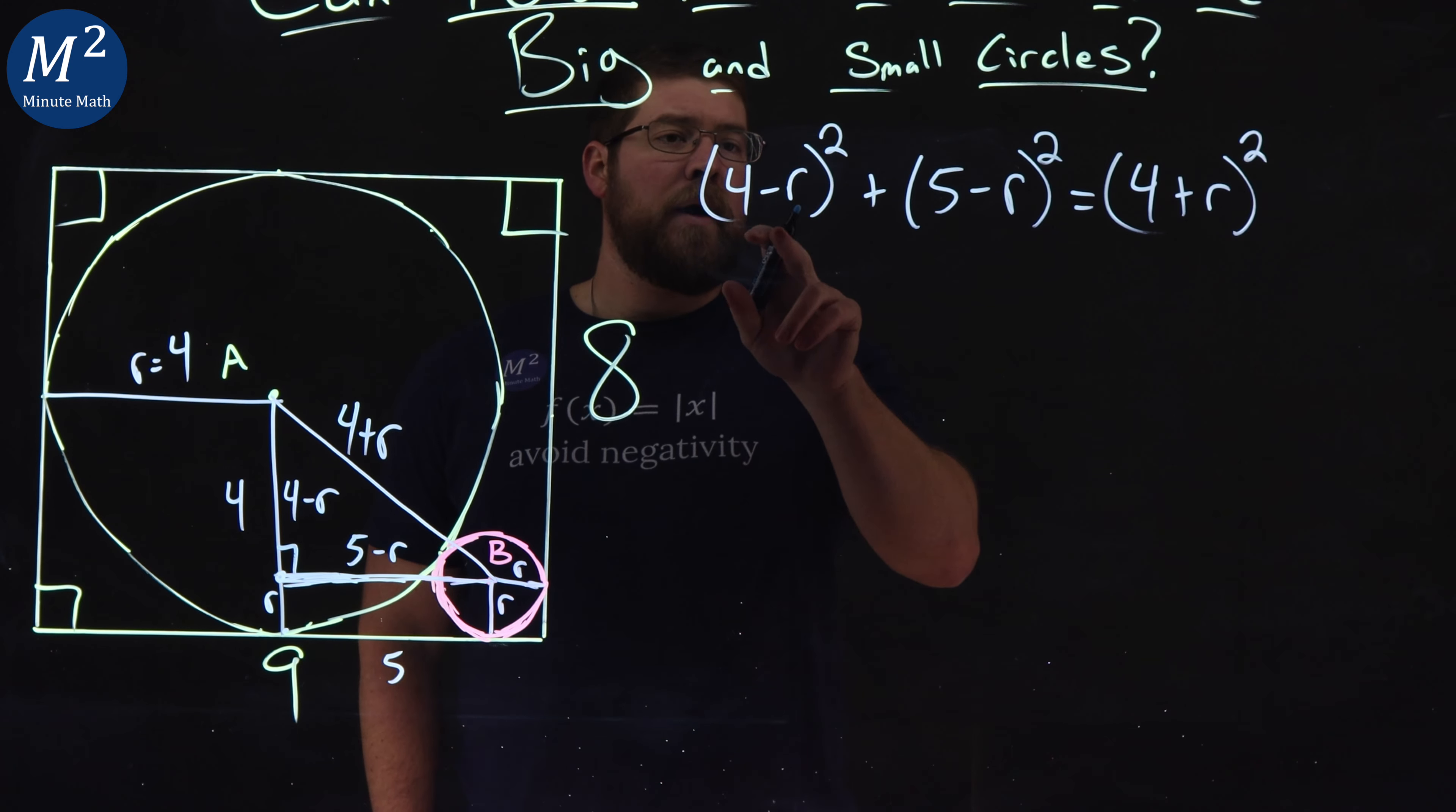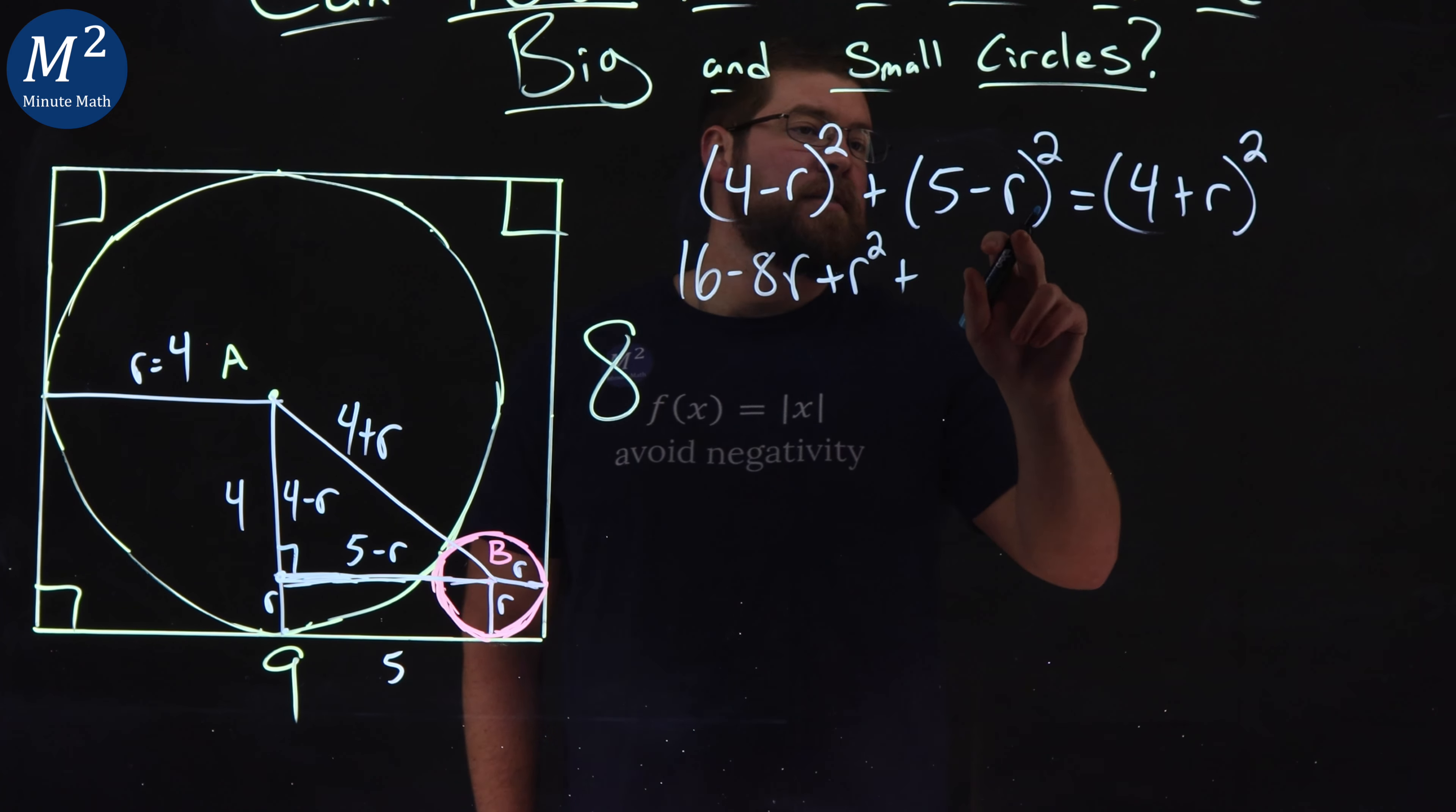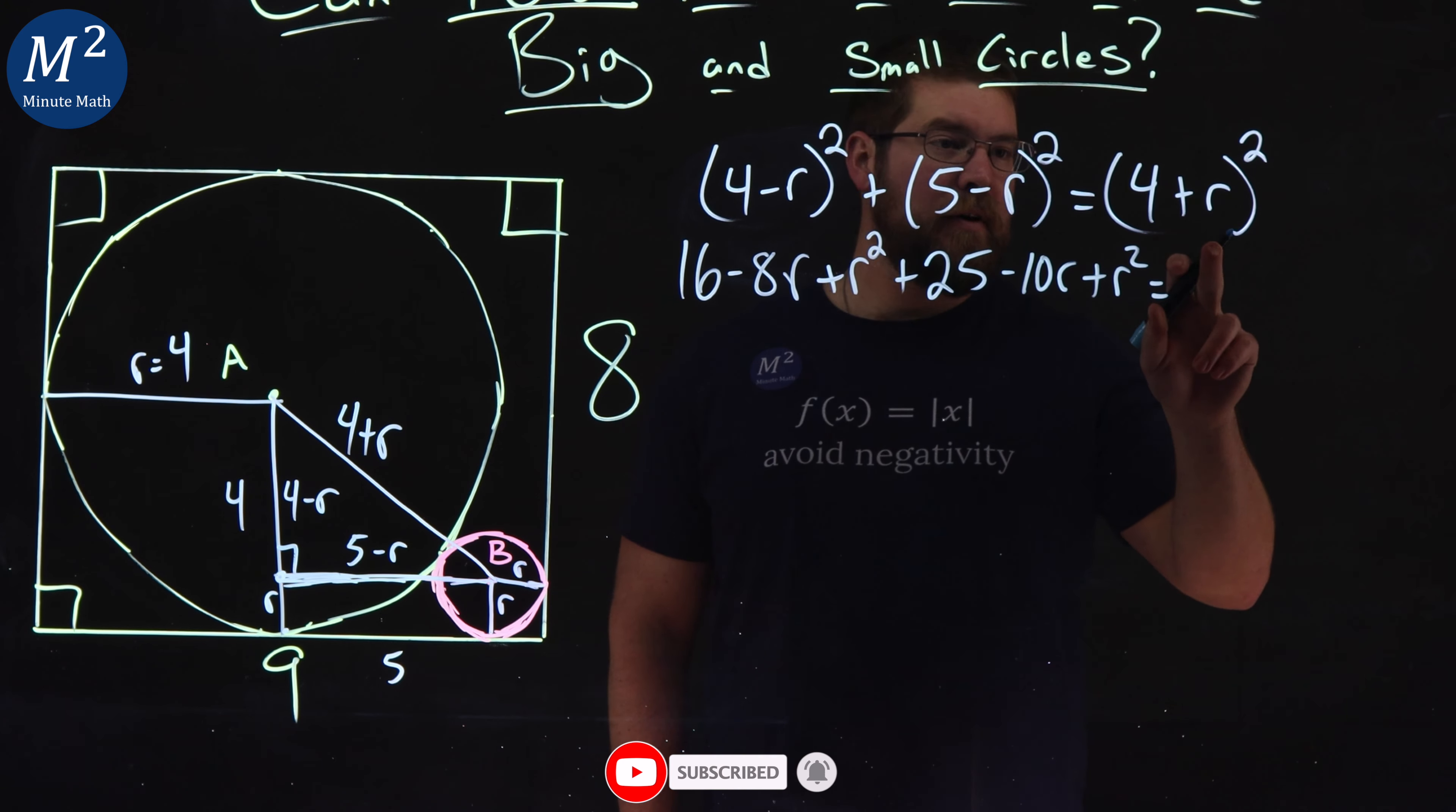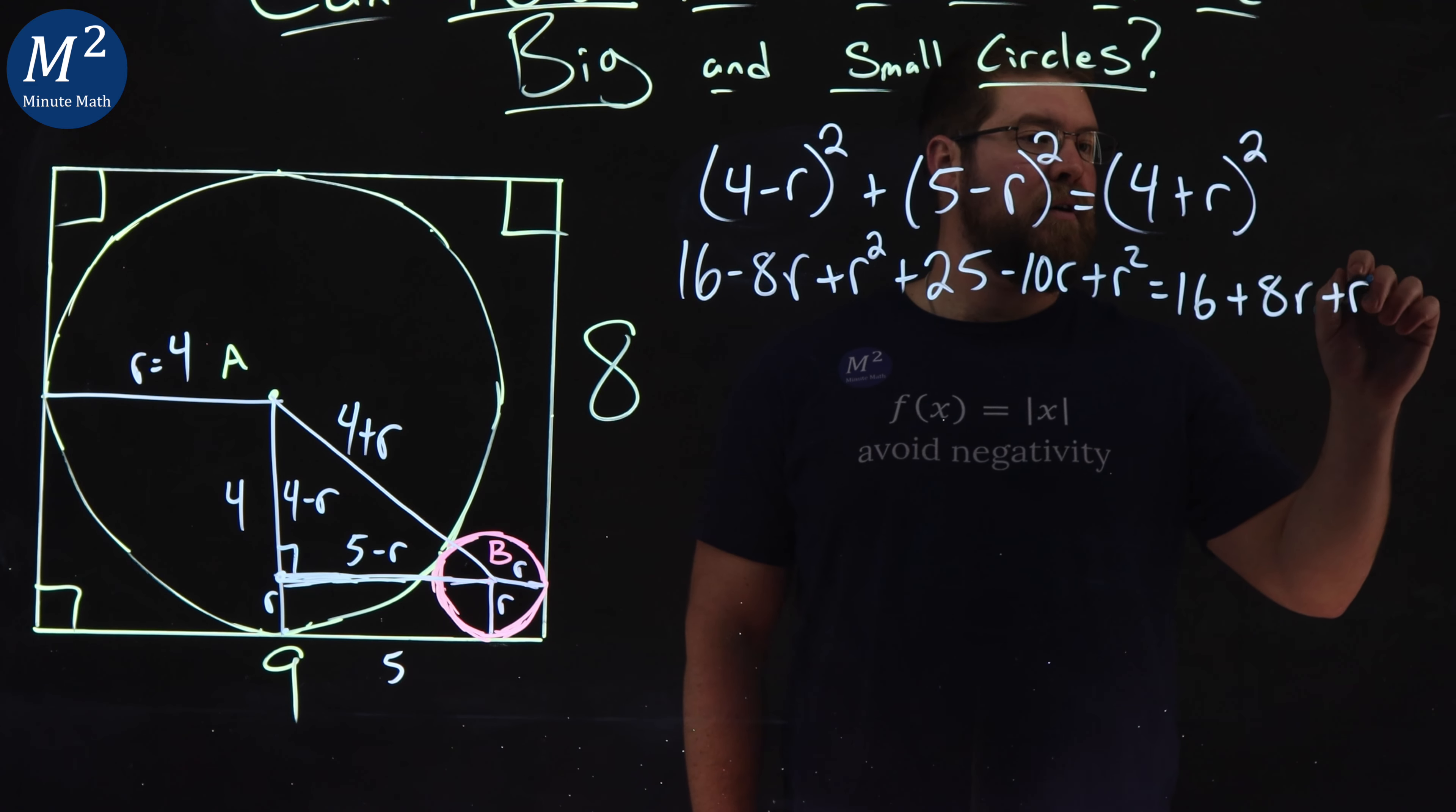Now we're going to multiply that out. Four minus R all squared is 16 minus 8R plus R squared. Here, five minus R all squared is 25 minus 10R plus R squared. And that is equal to the last part here, that's 16 plus 8R plus R squared.